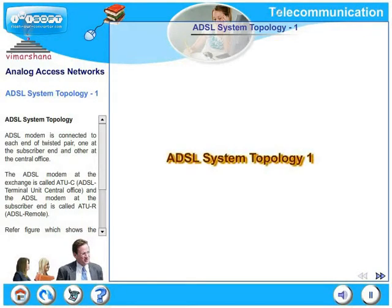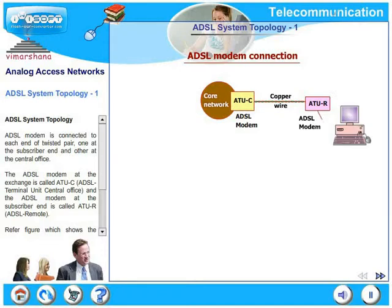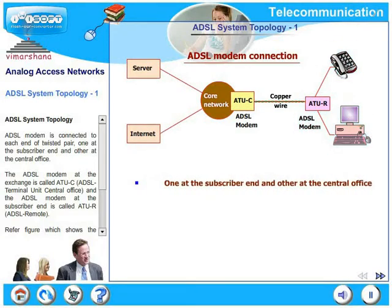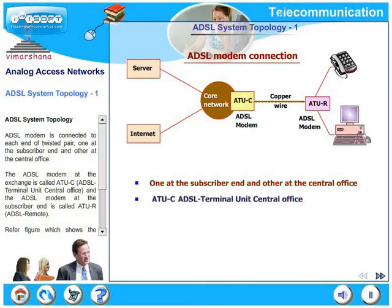Let us look at ADSL system topology now. An ADSL modem is connected to each end of the twisted pair, one at the subscriber end and the other at the central office. The ADSL modem at the exchange is called ATUC, ADSL Terminal Unit Central Office. And the ADSL modem at the subscriber end is called ATUR, ADSL Remote.